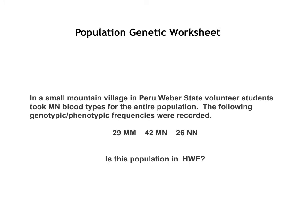The best way to illustrate this is with a real-life example. Let's say a group of students goes to a mountain village in Peru and measures MN blood types. They measure the blood types of the village and find: 29 individuals are MM, 42 are MN, and 29 are NN.